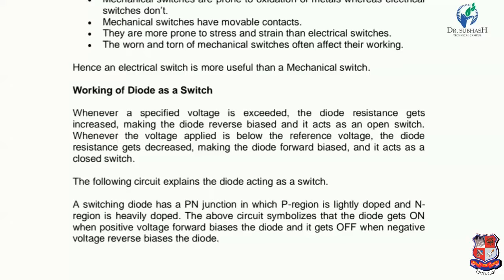The circuit shown demonstrates how a diode can work as a switch. A switching diode has a PN junction in which the P region is lightly doped. Doping refers to the process of adding impurities to a pure semiconductor material. When positive voltage is applied, the diode is forward biased and turns ON. When negative voltage is applied, the diode is reverse biased and turns OFF.